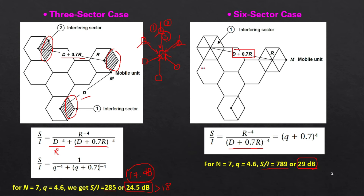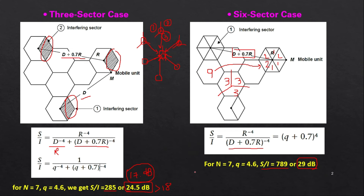For example, if one cell has nine channels and we divide it into three sectors, each sector gets three channels. If we divide into six sectors, each sector gets only about one or two channels, supporting fewer users. Therefore, we must decide whether six sectors or three sectors is suitable based on the capacity required at that particular location.